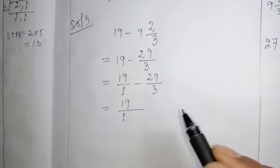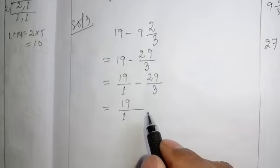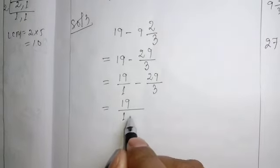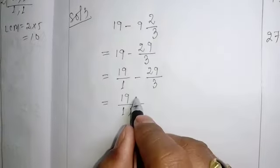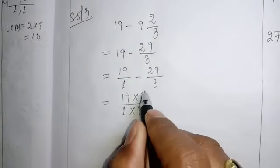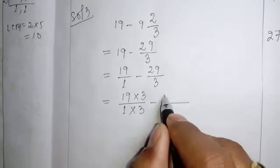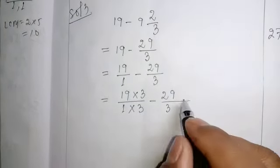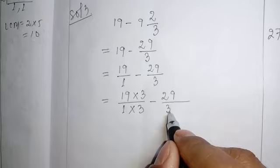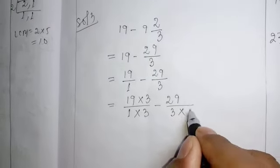Then we need to make their denominator 3. 1, if we have to make it 3, multiply with 3. This one also, same number should be multiplied to minus 29 by 3. It is already 3, so then you multiply with 1.